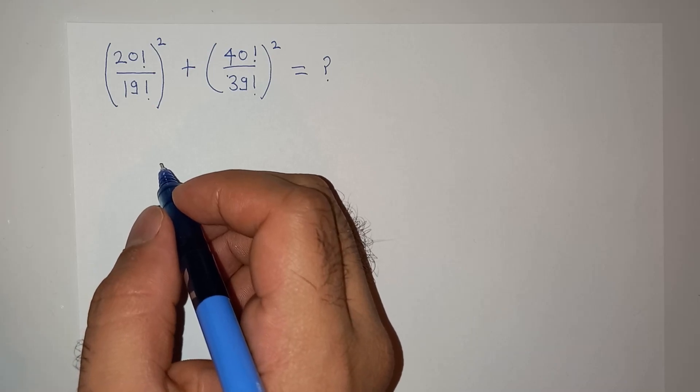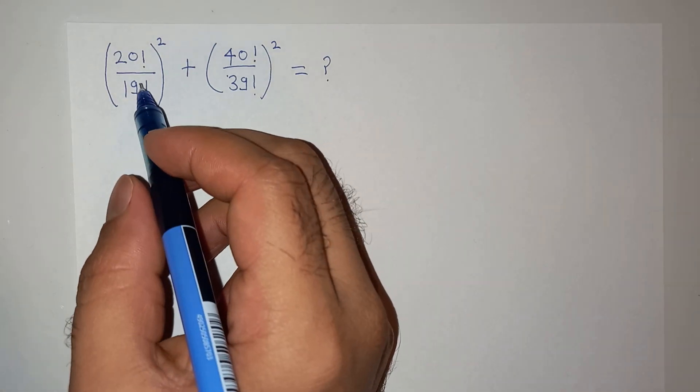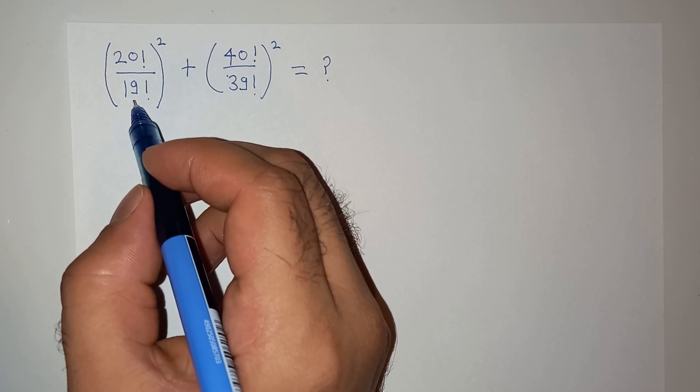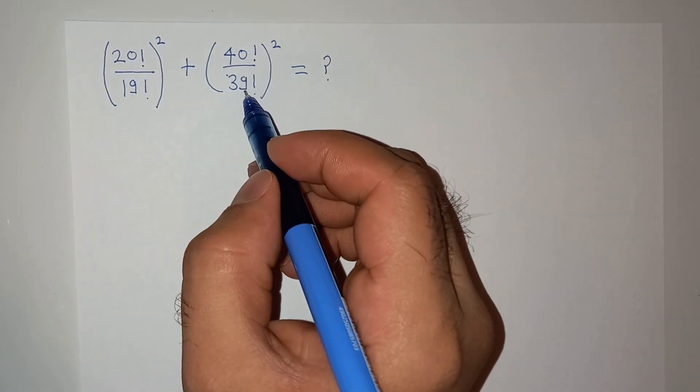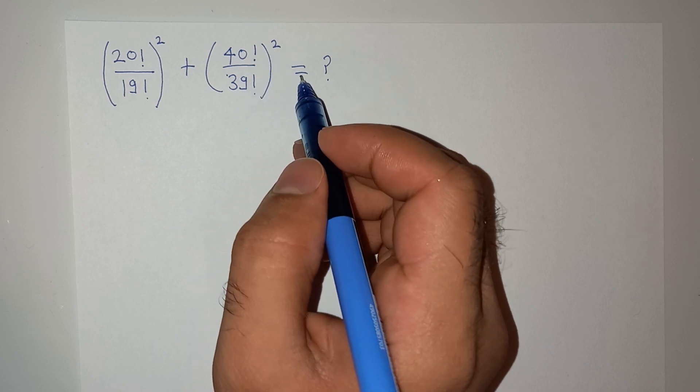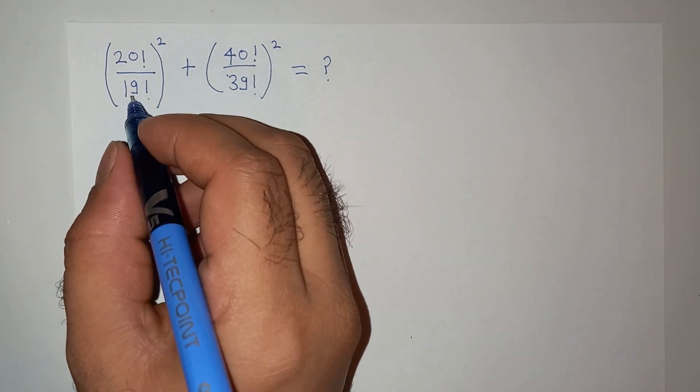Hi guys, welcome back to your channel. Today we will solve this question which is 20 factorial divided by 19 factorial square, plus 40 factorial divided by 39 factorial square, and we have to find the value.